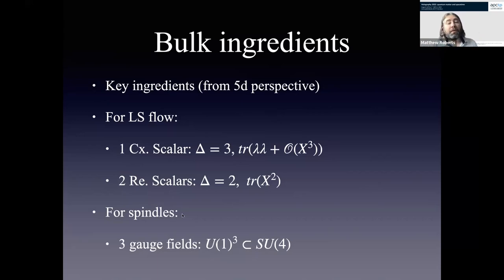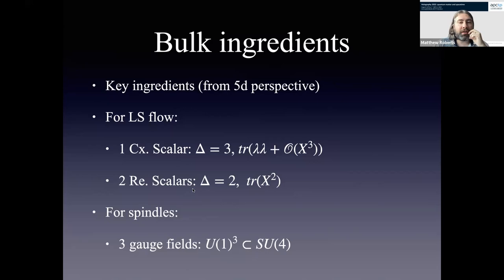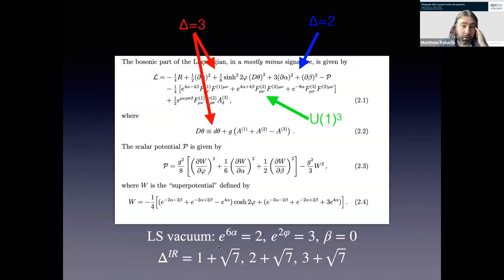To study the Leigh-Strassler fixed point wrapped on a spindle, I need to turn on a mass for a chiral multiplet, which means a complex scalar in my bulk theory of dimension three — a fermion mass. Because of supersymmetry, along with it come scalar fields that are boson masses. And to construct spindles holographically, I need gauge fields — since I want to make sure the total space is regular, I need to think of gauge fields living in orbit bundles.